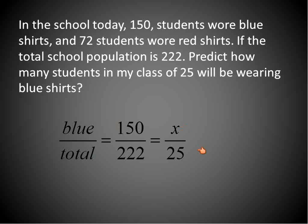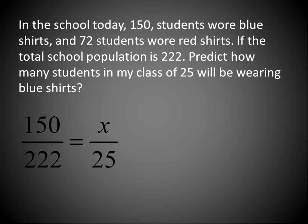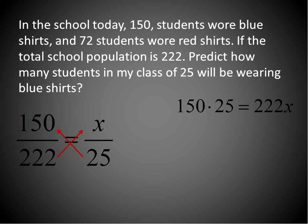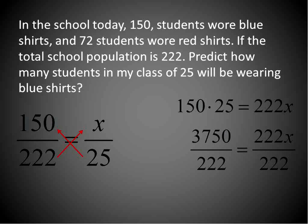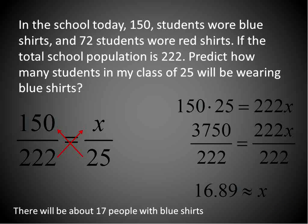The total number of blue shirts in my classroom, I don't know, out of 25 students — that's the population. I use blue on the top consistently and the total number of students on the bottom consistently. Now I'm ready to solve this using proportions. When we solve proportions, we use cross multiplying: 25 times 150 and 220 times x. 150 times 25 is 3,750. Now I'll divide both sides by 220 to get my x value completely by itself. So about 16.89 equals x. X is the number of students in my class wearing blue shirts, so I would say there's about 17 people in my class wearing blue shirts — that's my prediction based on the sample I took of the entire school.